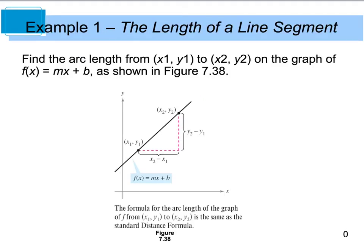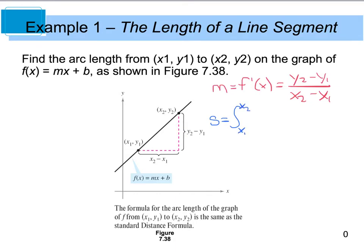Let's begin by looking at our first example. We want to find the arc length from x₁, y₁ to the point x₂, y₂ on the graph, and the graph is the function f of x equals mx plus b. The slope m of a straight line equals f prime of x, which is really y₂ minus y₁ divided by x₂ minus x₁. We're going to plug that into our arc length equation: S equals the integral from x₁ to x₂ of the square root of one plus f prime of x squared, integrated with respect to x.